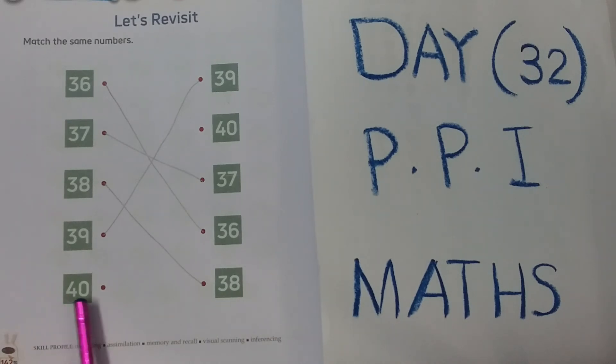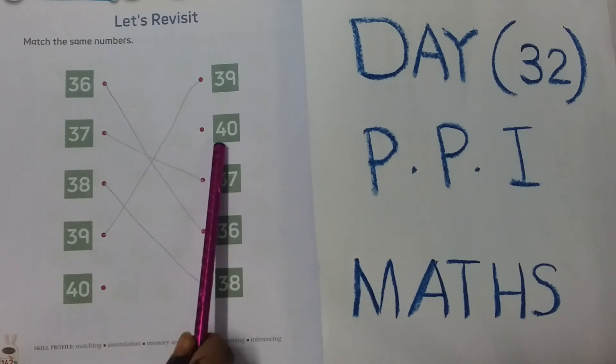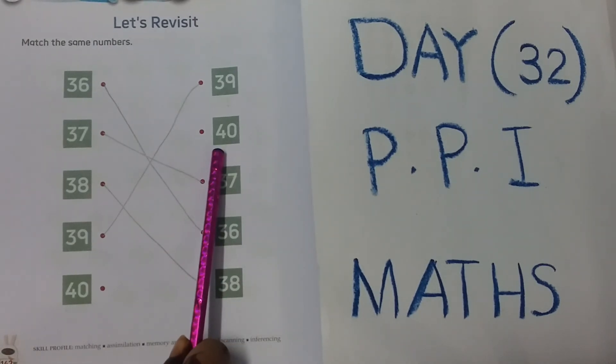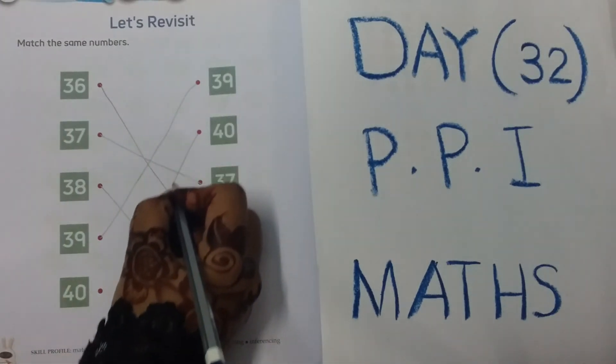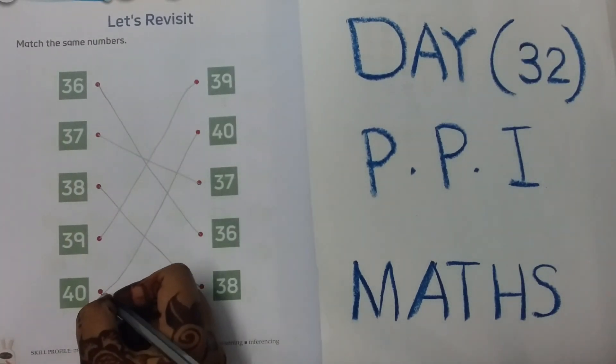40. 4, 0, 40. Where is another 40? Yes, 4, 0, 40. So match with the same number. 40 with the 40.